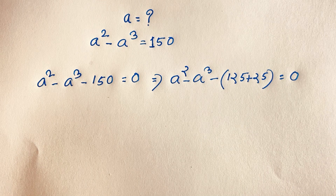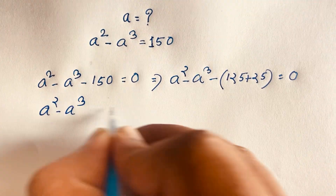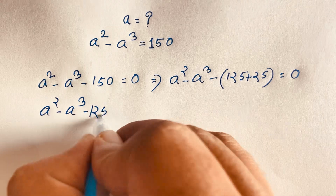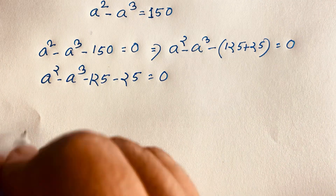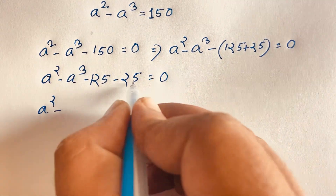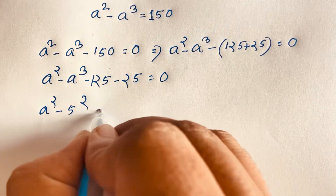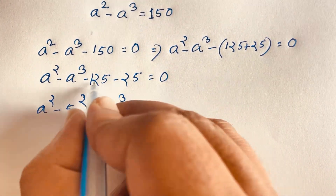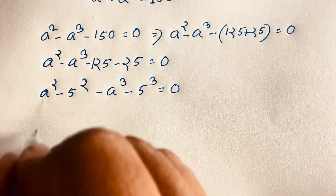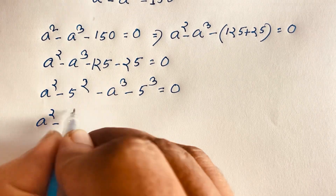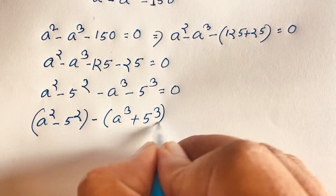Now you can see here is a nice equation. We have a squared minus a cubed minus 125 minus 25 is equal to 0. Here is a squared, and if I take 25 to this side, it will be 5 squared, which is 25. And here is a cubed, and you know that 125 is 5 to the power 3. So we can write a squared minus 5 squared, and taking negative as common, it will be minus the quantity a cubed plus 5 cubed, is equal to 0.